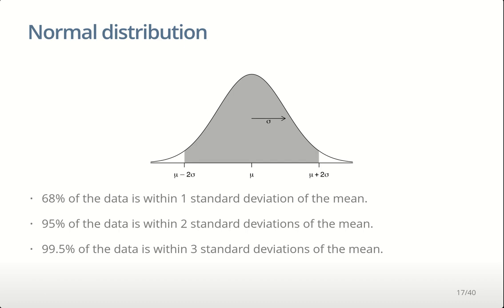There are some empirical rules useful to remember about the normal distribution. Almost 68% of the data is within one standard deviation — take the mean, subtract one standard deviation, take the mean and add one standard deviation, and that range covers 68% of the data. 95% of observations from a normal distribution will be within two standard deviations of the mean. And almost all the variation — 99.5% — is within three standard deviations of the mean.